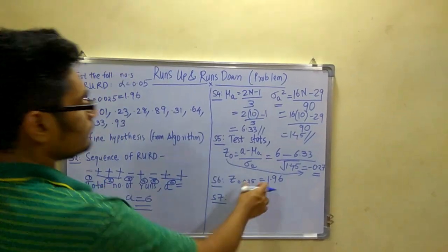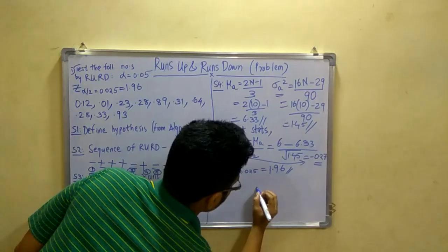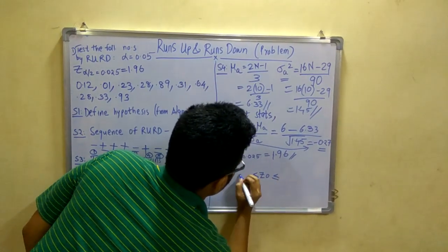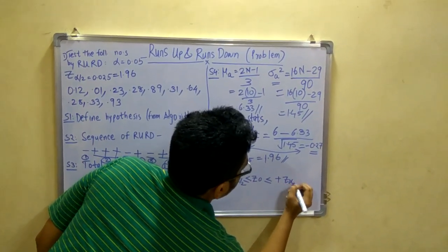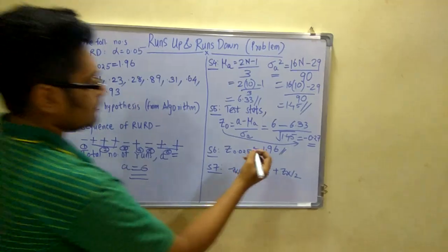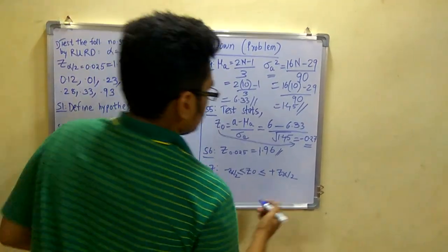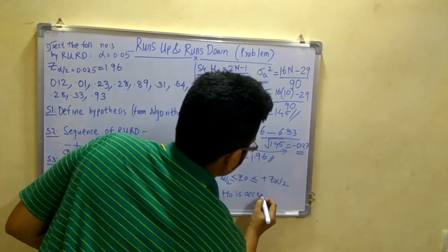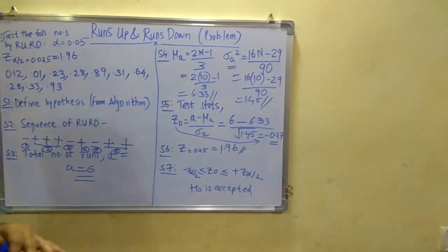Now after this they have given this threshold as 1.96. The final step is to compare that the z0 is lying between minus z alpha by 2 and plus z alpha by 2. As you can see, minus 0.27 lies between this range, so we say that z0 is accepted. And therefore the random numbers are independent of each other.